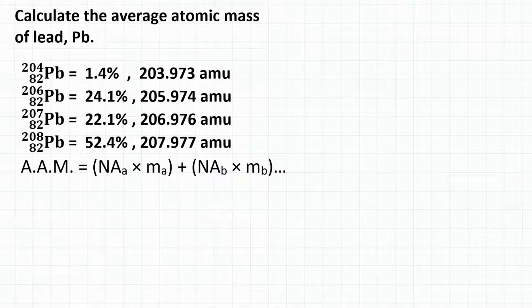All right everyone, let's calculate the average atomic mass of lead, which is the chemical symbol Pb. Okay, so for average atomic mass we need two things.